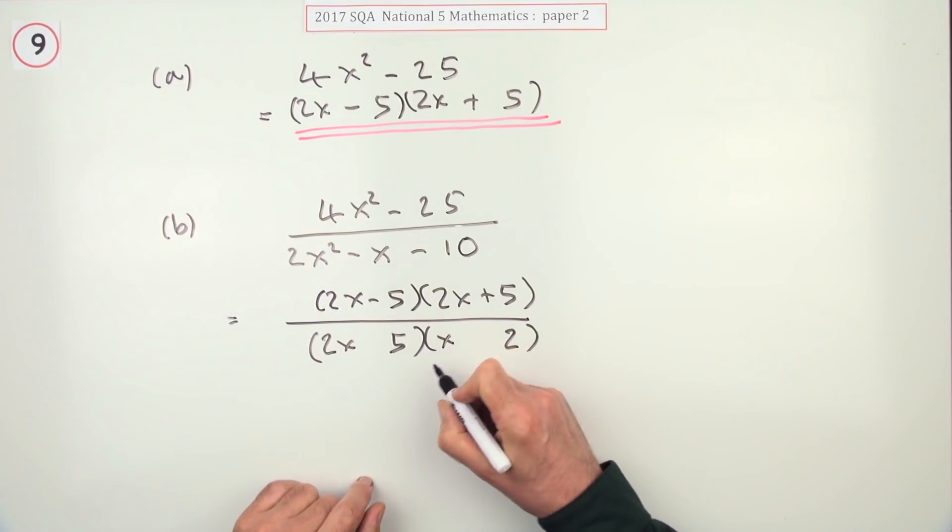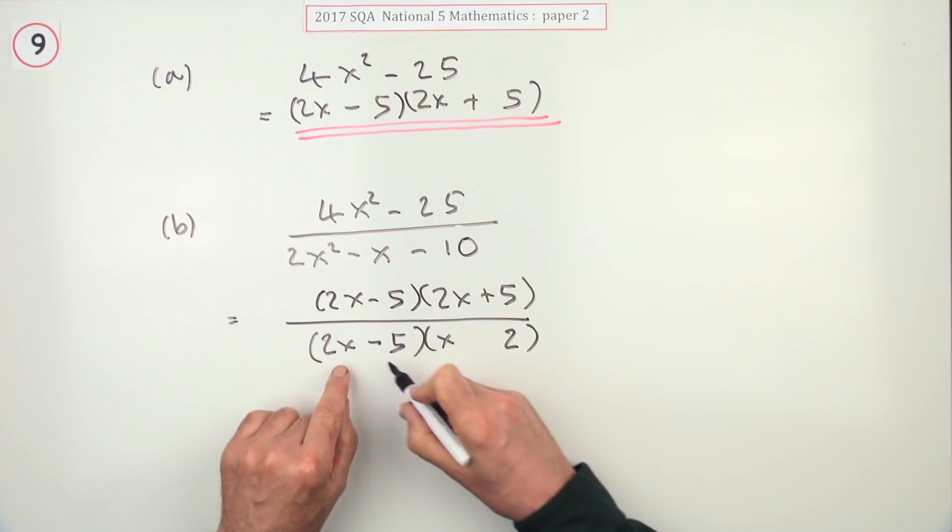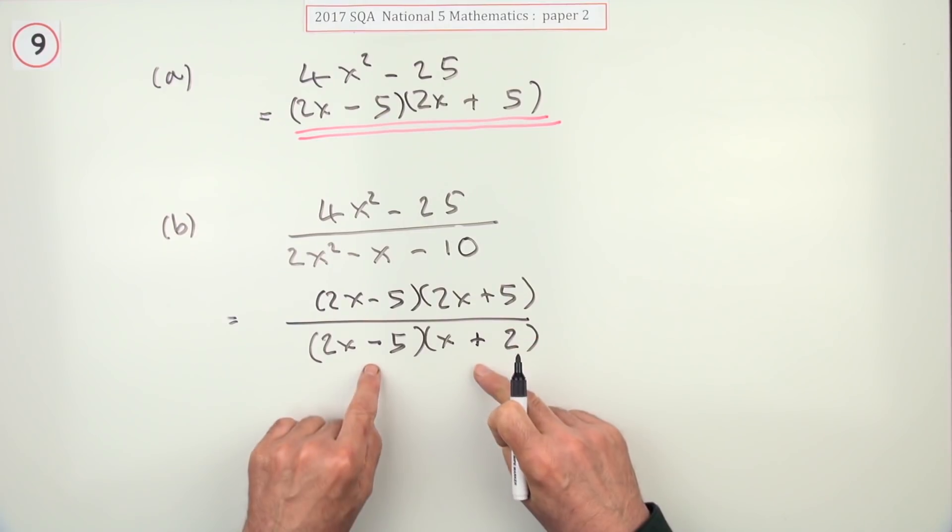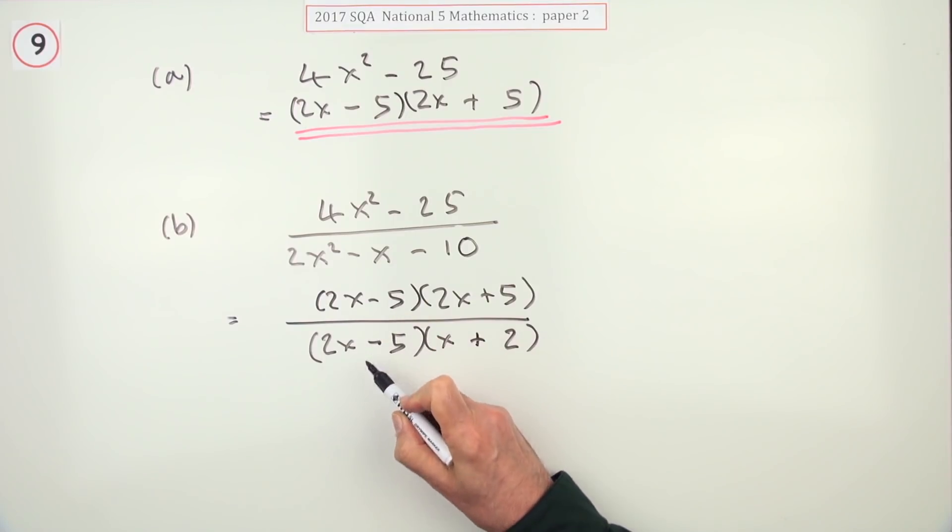So this has to get the positive to make them opposite to give a negative 10 there. Now those two parts cancel.